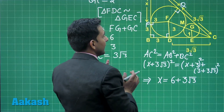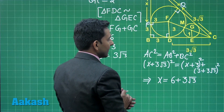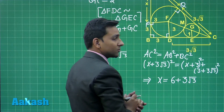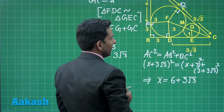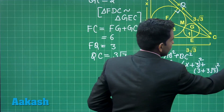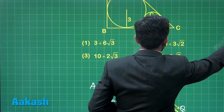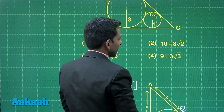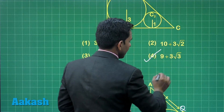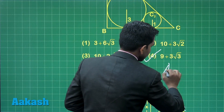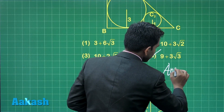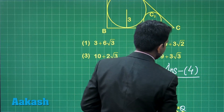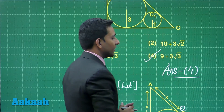Since we need the length of AB, we add 3 to the value of x. Checking the options, 9 plus 3√3 is the correct answer for this question, which corresponds to option number 4. I hope that is clear to everyone.